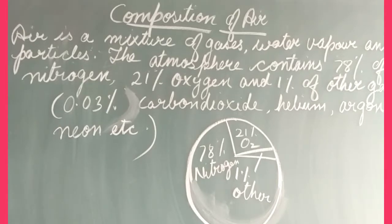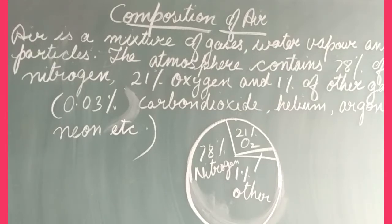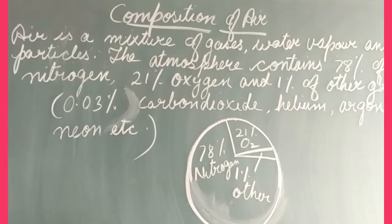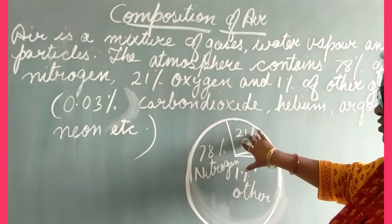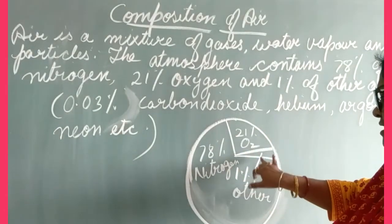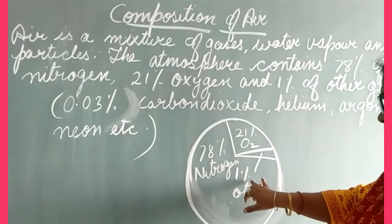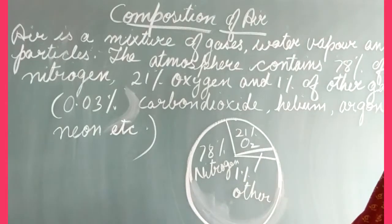So today you will learn about the composition of air. Looking at the diagram, it shows that 78% nitrogen is there, 21% oxygen, and 1% other gases.